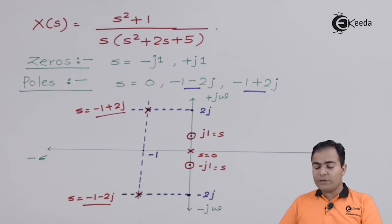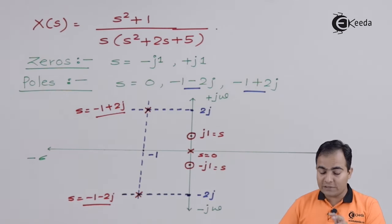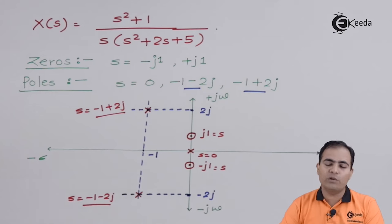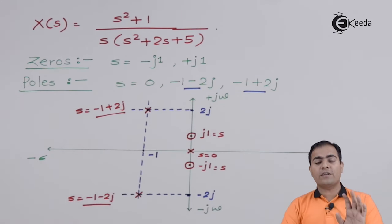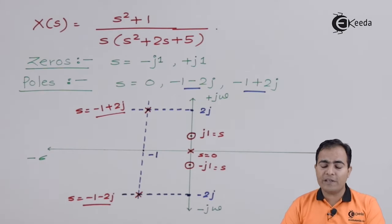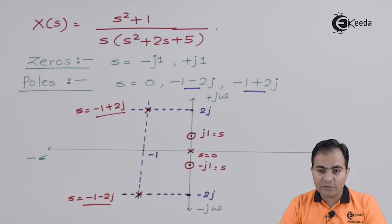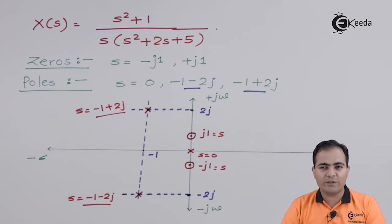So we have plotted the pole-zero diagram with two zeros at ±j1 and three poles at s = 0, s = −1 + 2j, and s = −1 − 2j. We will continue solving various types of numericals related to poles and zeros. Thank you for watching. Stay tuned to Ikeda and subscribe for further videos.